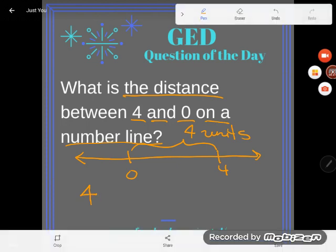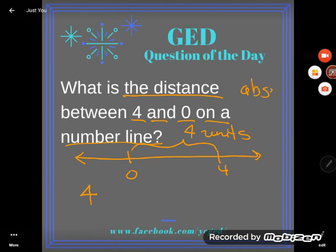Now I need to teach you something super important, though. That has a name. The distance between a number and 0 on a number line has a name. It's known as the number's absolute value. Absolute value.